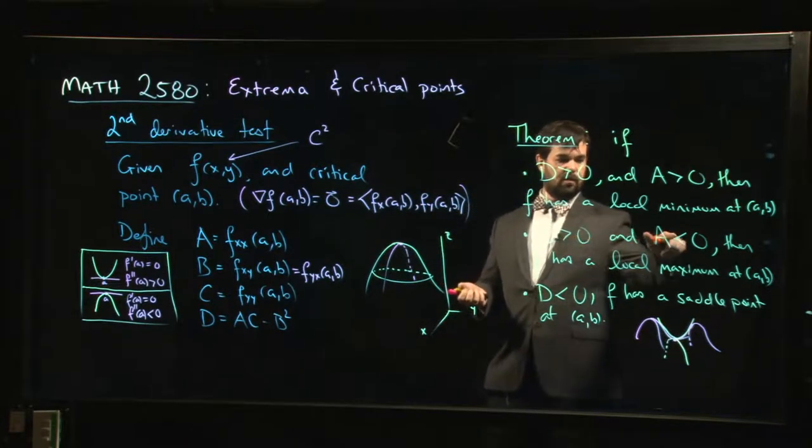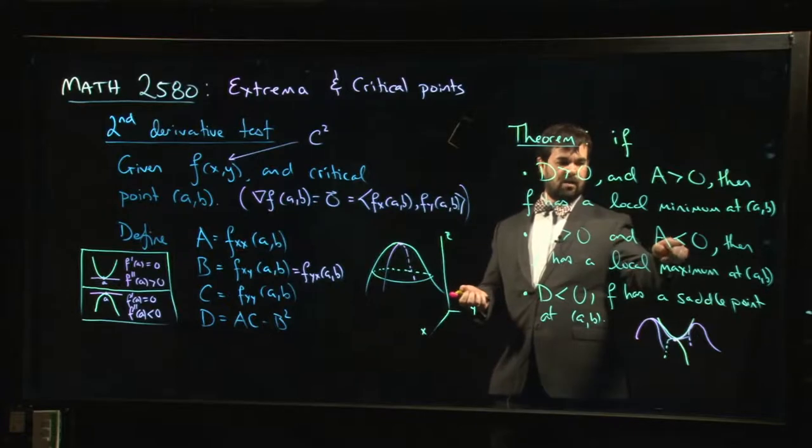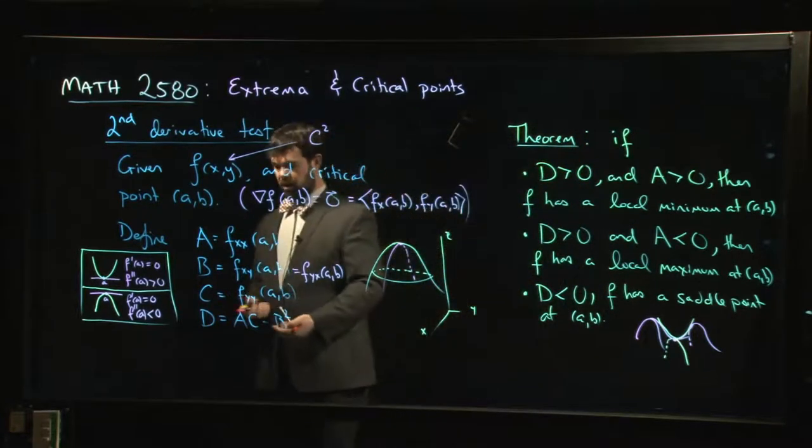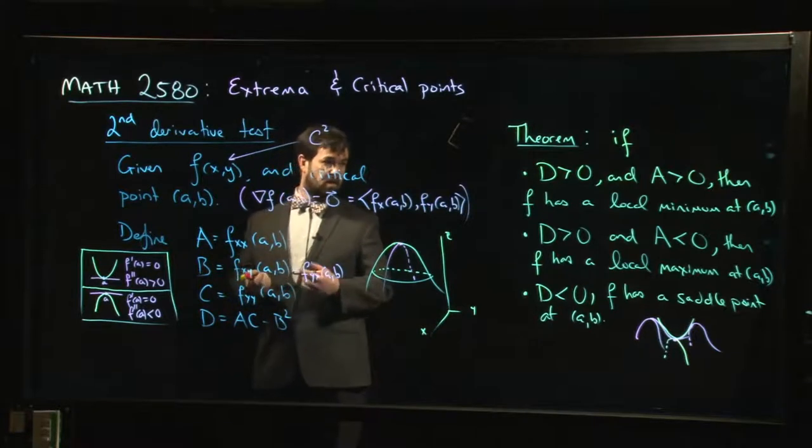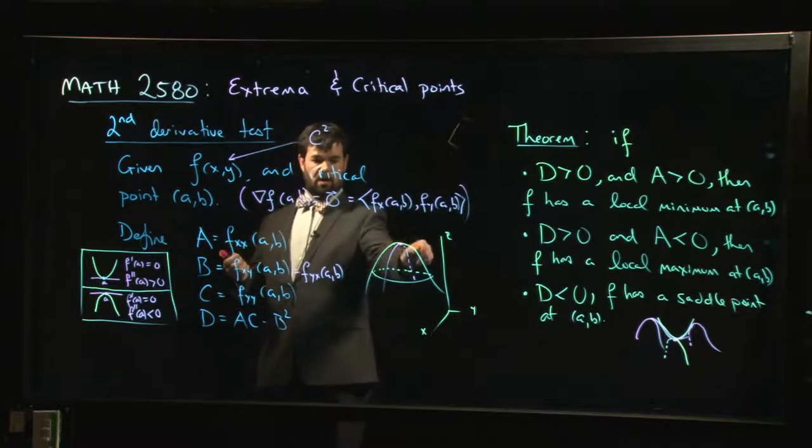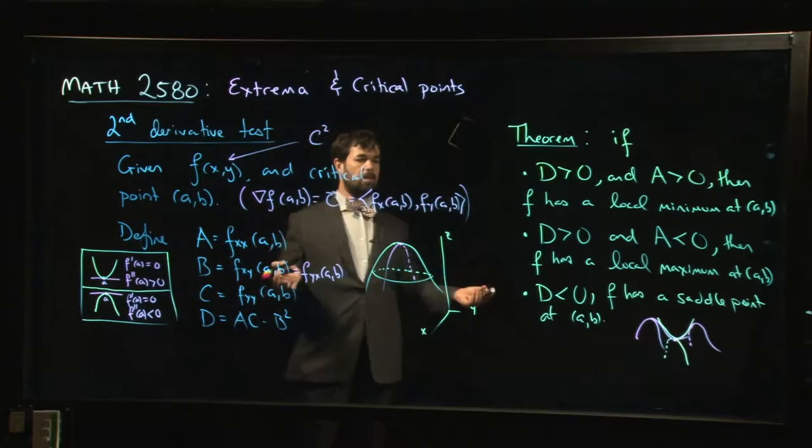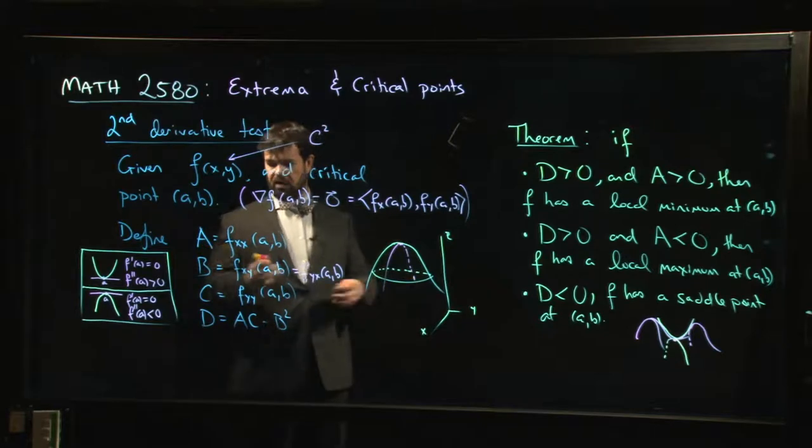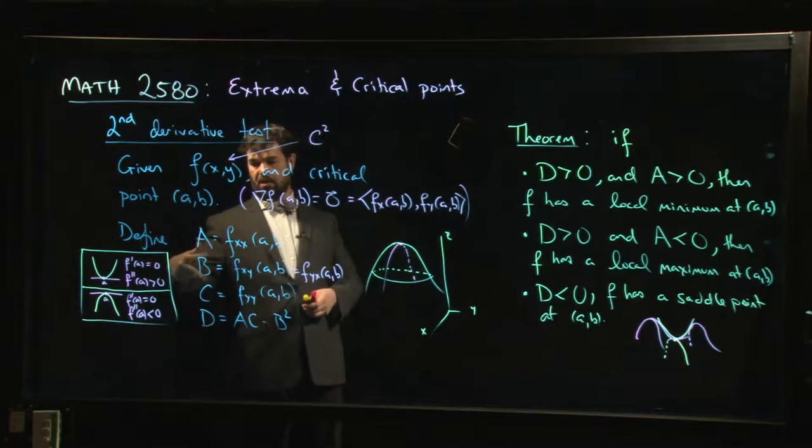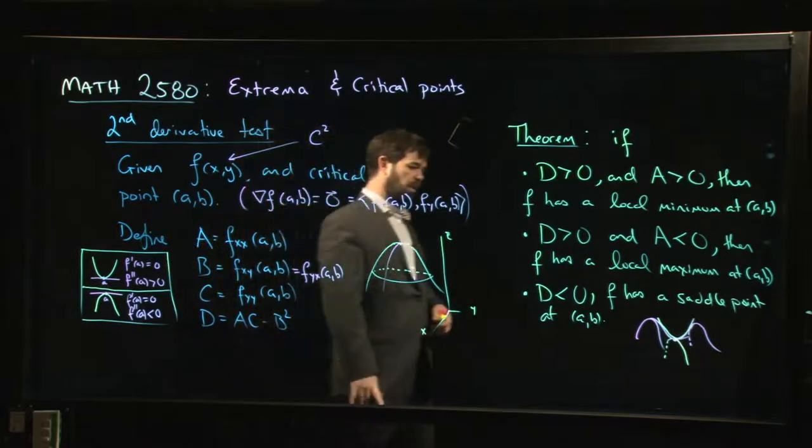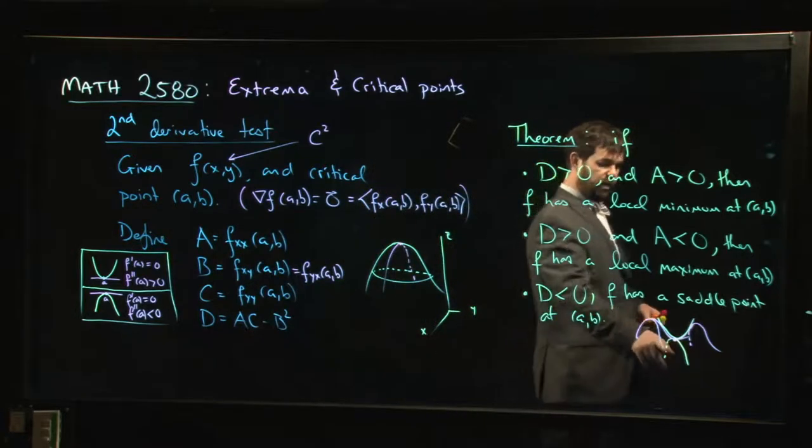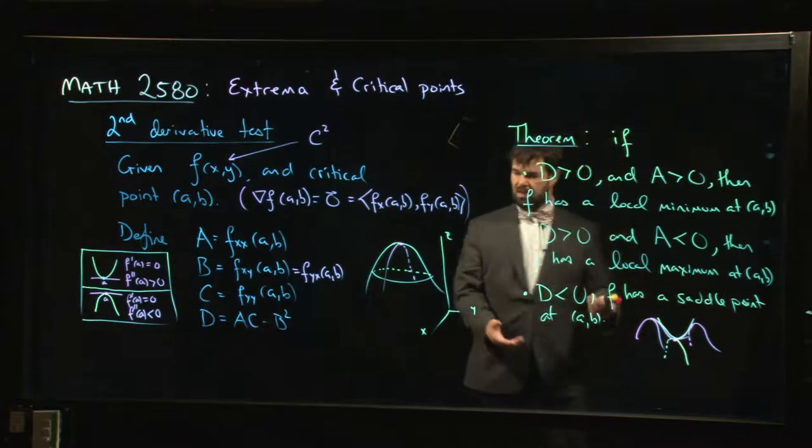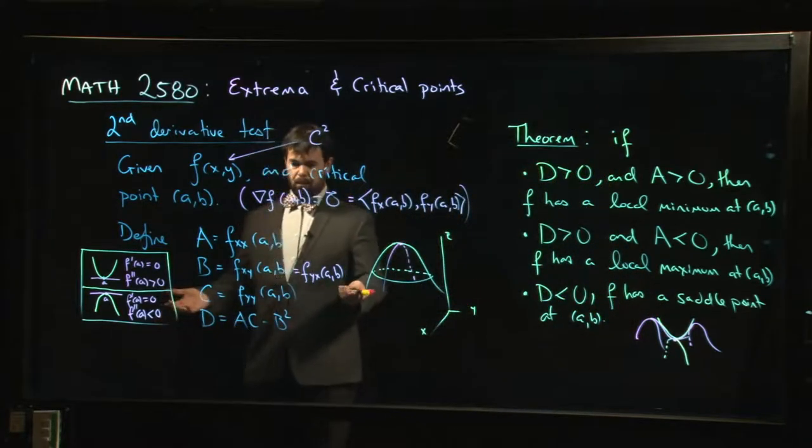Similarly, if D is positive and A is negative, so if A is negative, the only way D can be positive is if C is negative as well, in which case you have concave down in both directions and you have a maximum. So this is reasonable. And certainly if A and C have opposite signs, then D is going to be negative and you have something that looks like this saddle point. If you're curving up in the Y direction and down in the X direction, that's exactly what you should expect things to look like.